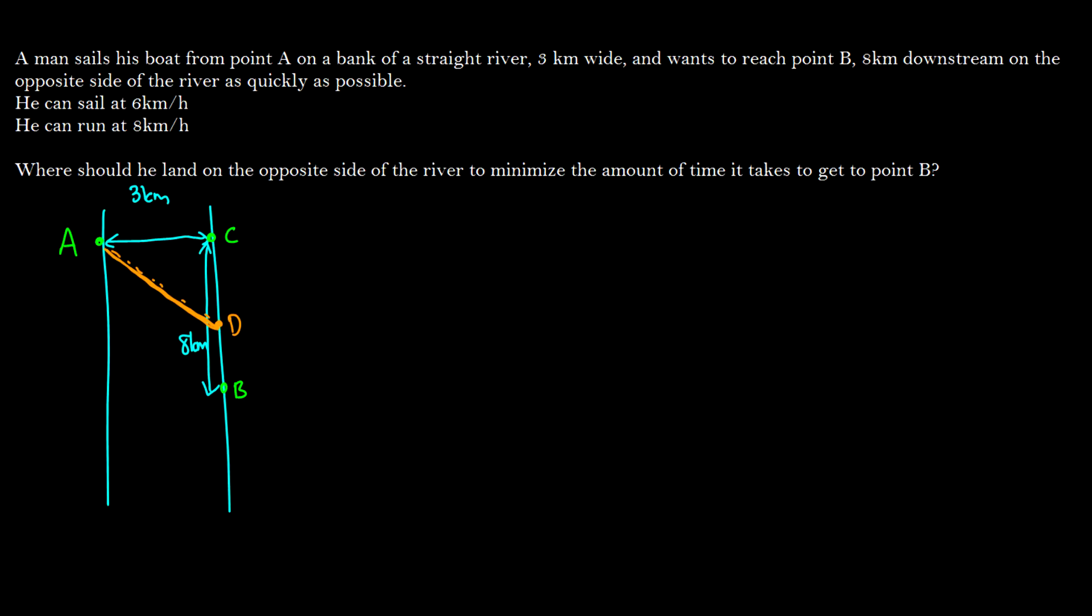First of all, the distance from C to D here, this is what we're trying to find, which is going to be the perfect amount of distance to land, and we're going to call this X. So by that, the distance from D to B is going to be 8 minus X, since we have whatever is left of 8 after doing X. So this distance here will be 8 minus X.